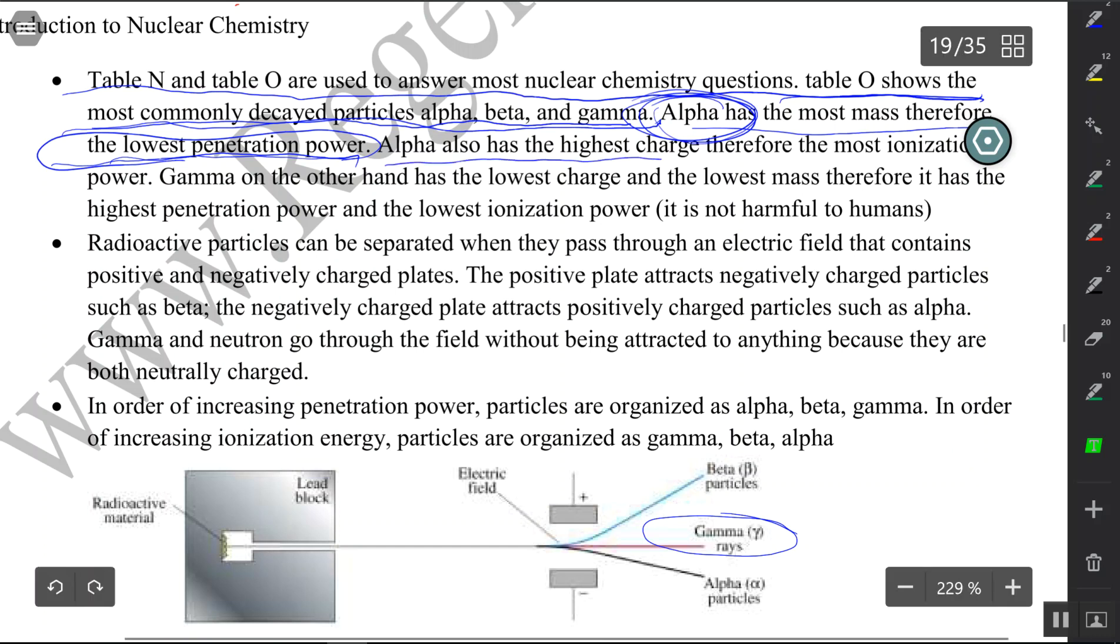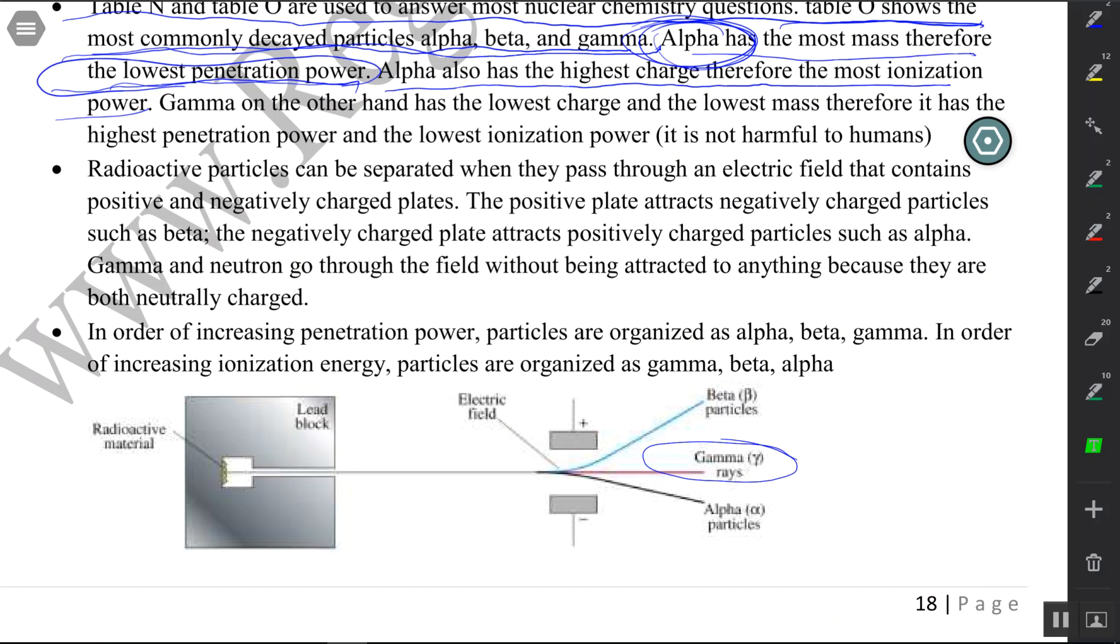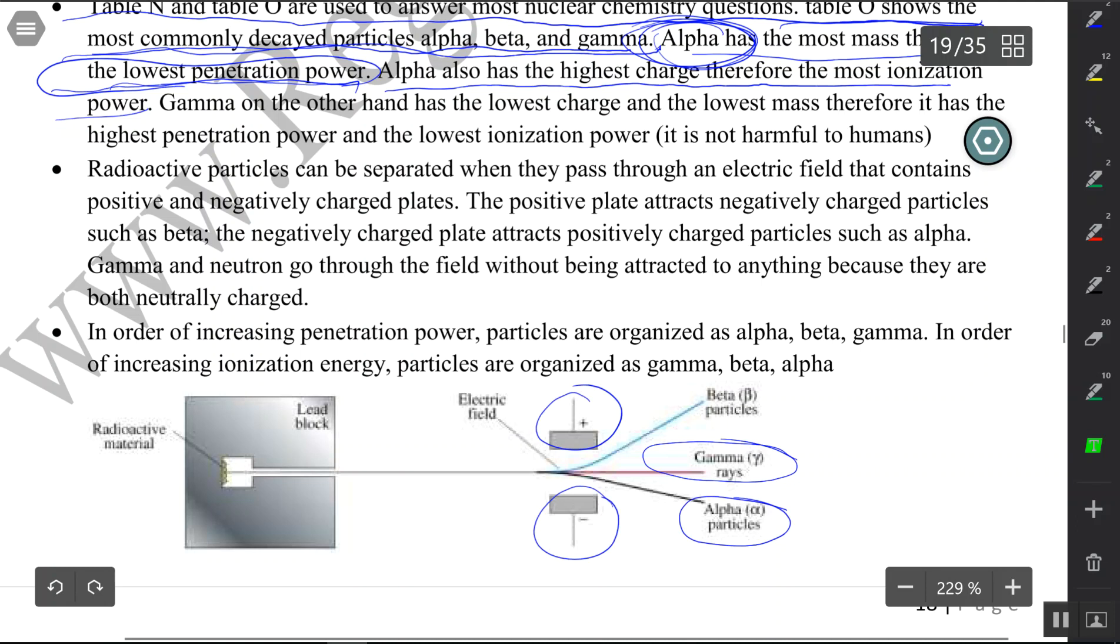Alpha also has the highest charge, therefore the most ionization power. Let's take a look at what ionization power is. Alpha is most likely to cause harm when it goes into a system because a system usually would have a very balanced charge - the positives and negatives are balanced, the system is at equilibrium. If you bring in an alpha particle into the system, you could really influence how this system is going to react because alpha particles have a charge of plus two.